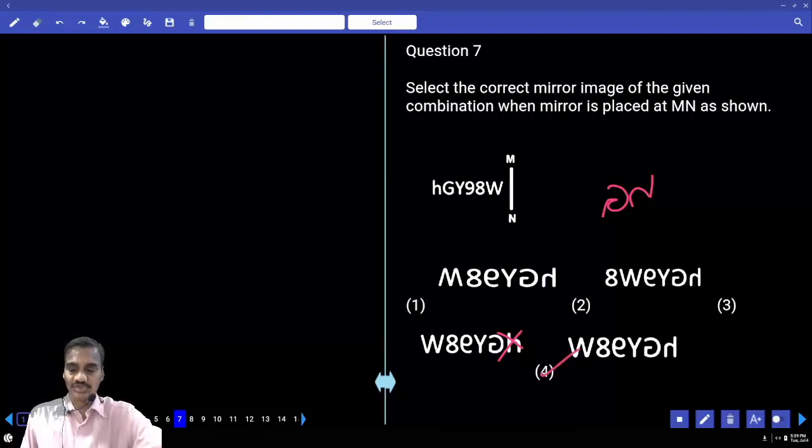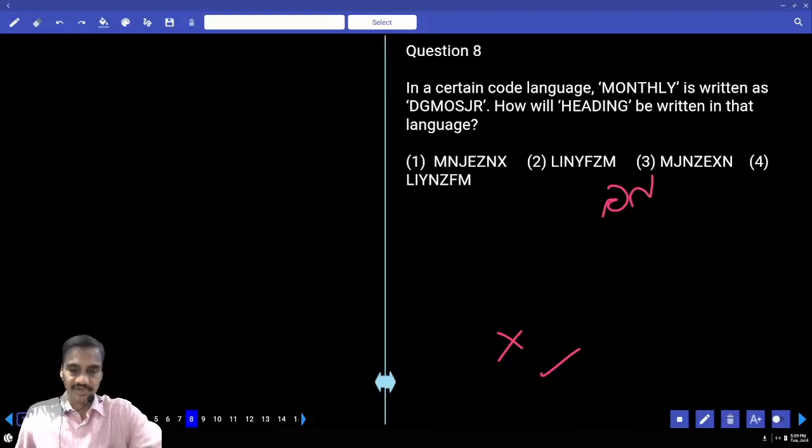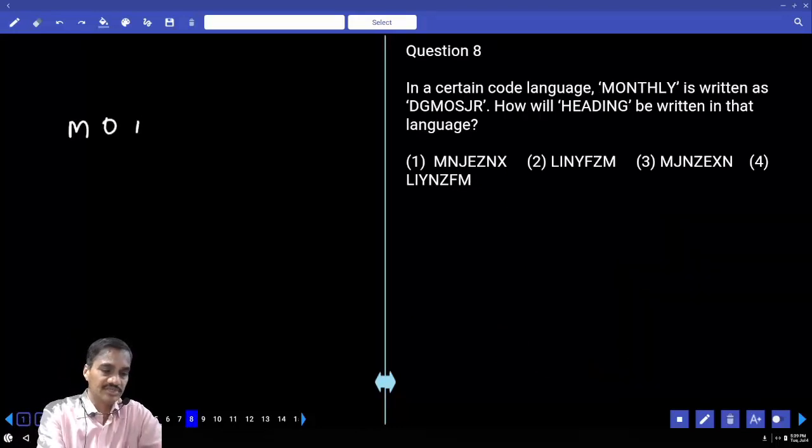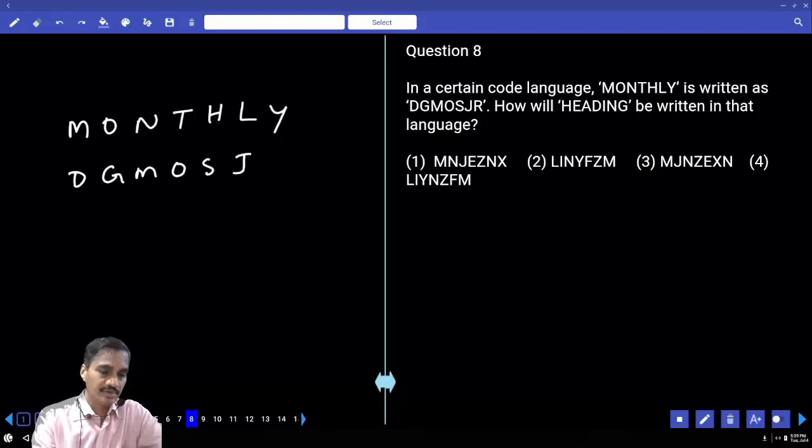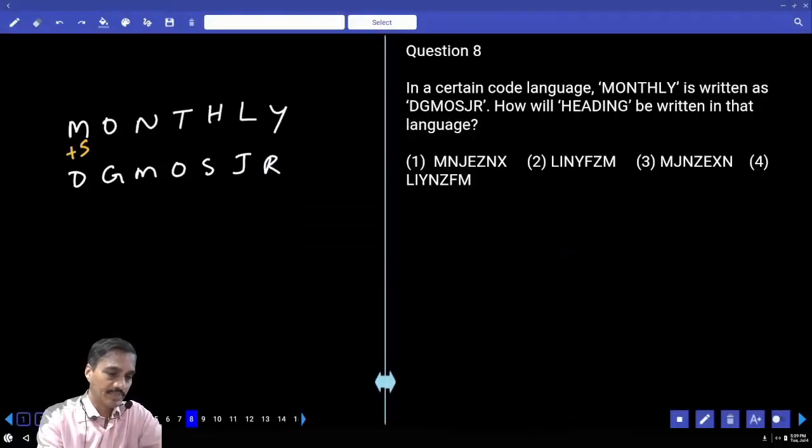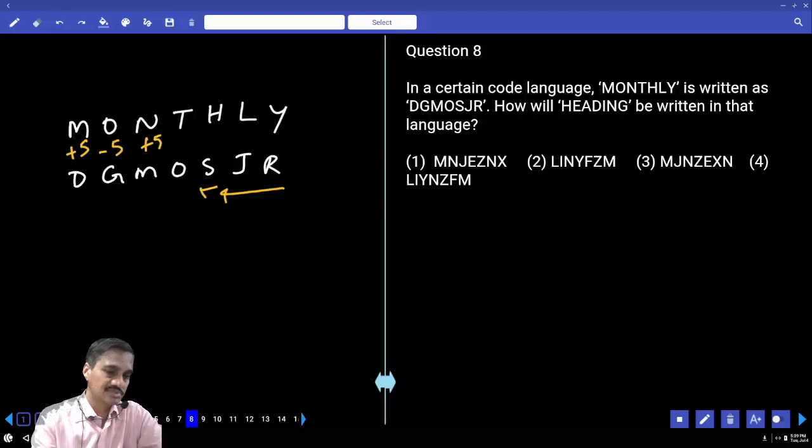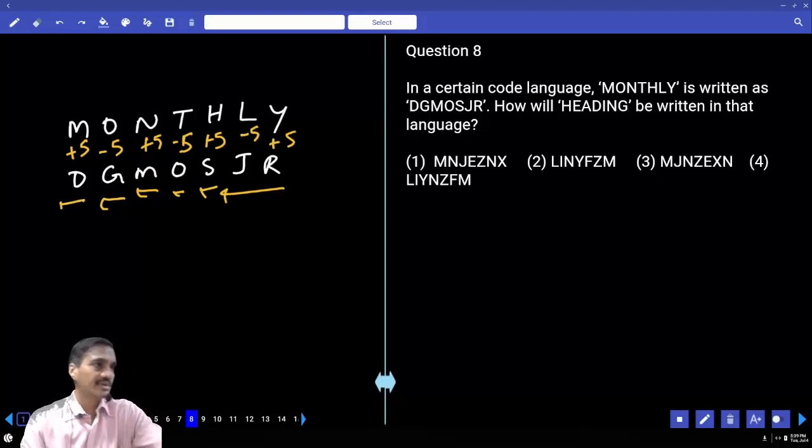Question eight: in a code language, MONTHLY is written as DGMOSJR. How will READING be written in that language? MONTHLY: M-O-N-T-H-L-Y, coded as D-G-M-O-S-J-R. M and R difference is +5, M+5 is R. O-5 is J. They're written in reverse order. N+5 is S written in reverse, T-5 is O, H+5 is M, L-5 is G, Y+5 is D. Pattern: +5, -5, +5, -5, then written in reverse order.